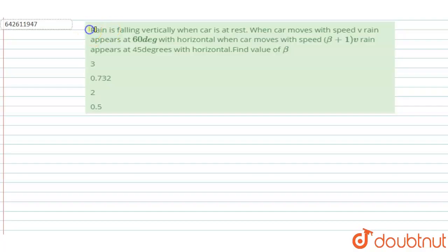Hello, welcome to Doubtnut. In this question, rain is falling vertically when the car is at rest. When the car moves with velocity V, rain appears at 60 degrees with the horizontal. When the car moves with speed (β + 1) × V, rain appears at 45 degrees with the horizontal. Find the value of β.